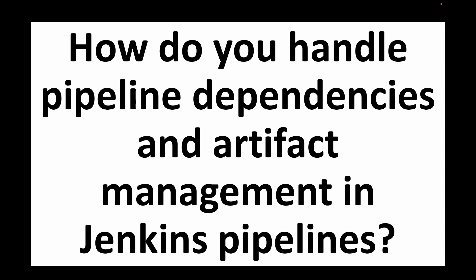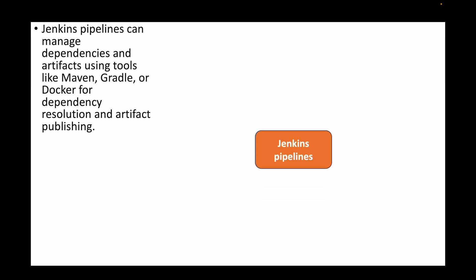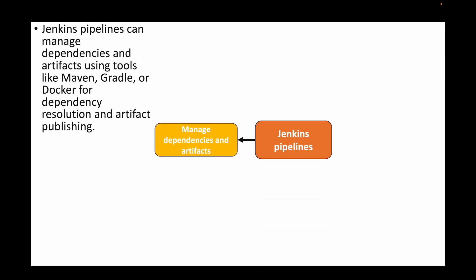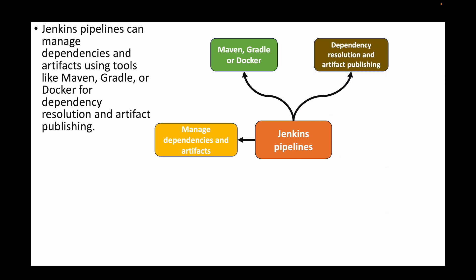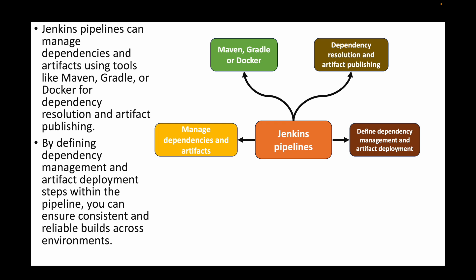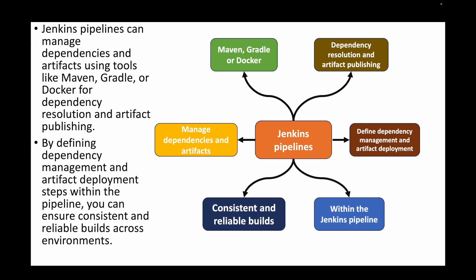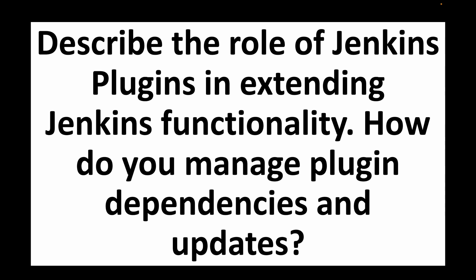The next question is: how do you handle pipeline dependencies and artifact management in Jenkins pipelines? Jenkins pipelines can manage dependencies and artifacts using dependency management tools like Maven, Gradle, or Docker for dependency resolution and artifact publishing. By defining dependency management and artifact deployment steps within the pipeline, we ensure consistent and reliable builds across environments.